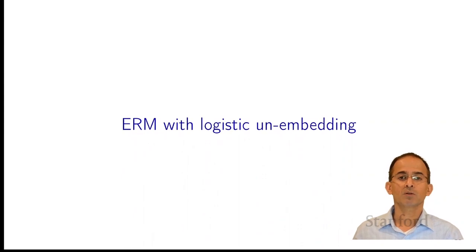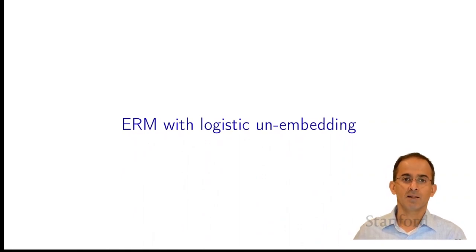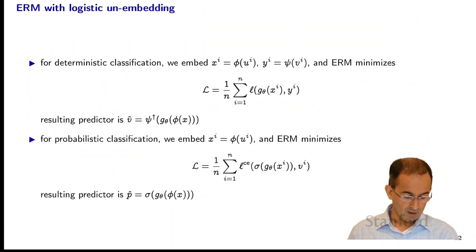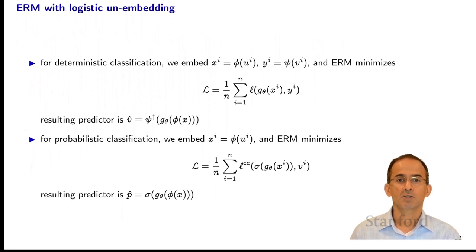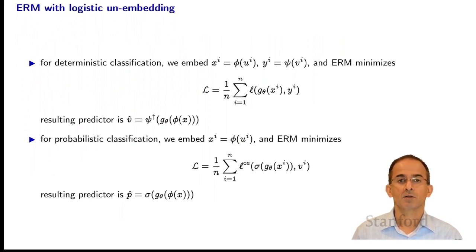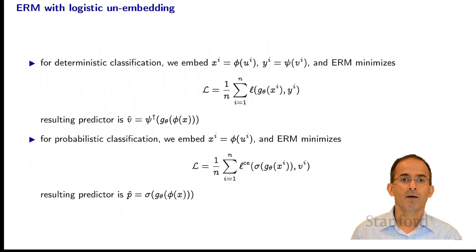Now we can do ERM with logistic unembedding. Let's compare with the deterministic case. In deterministic classification, we take our u's and v's, embed them as x's and y's, and use ERM to minimize the average loss of g of x_i and y_i over all i's. Then we get the resulting predictor by composing with the embedding and unembedding: v-hat is psi-dagger composed with g_theta composed with phi of u.